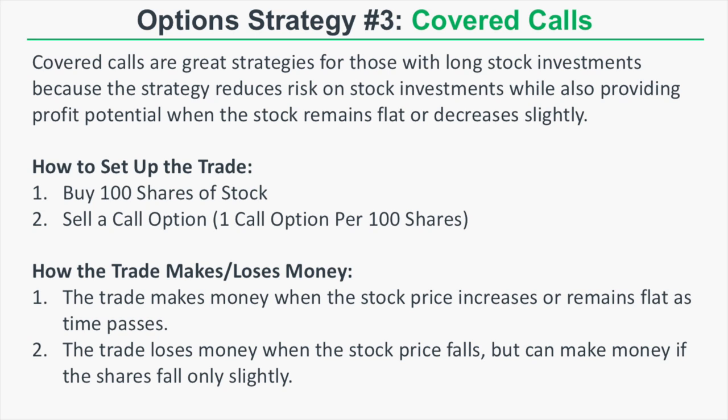By selling a call option against your shares of stock you create more than one way to profit. Here is how you set up the trade: you buy 100 shares of stock, or if you already own 100 shares you simply sell a call option against those shares — one call option per 100 shares of stock that you own.